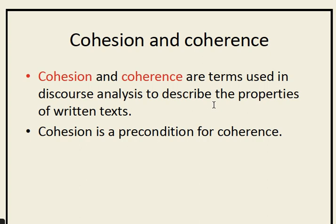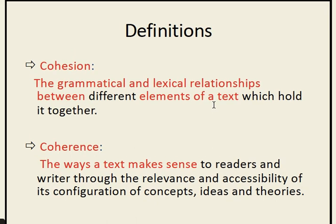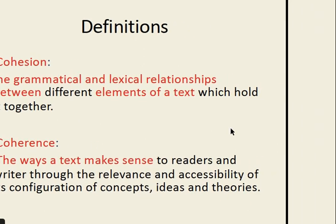Cohesion and coherence are terms used in discourse analysis to describe the properties of written text — how a paragraph is cohesive, how it is coherent, how it uses certain cohesive devices, and how it conveys its own meaning. The grammatical and lexical relationships between different elements of the text which hold it together is called cohesion. The ways a text makes sense to readers and writers through the relevance and accessibility of its configurations of concepts, ideas, and theories is called coherence. It means that cohesion is a precondition for coherence — both go side by side, but first we need cohesion, and then because of that cohesion, coherence can be established.